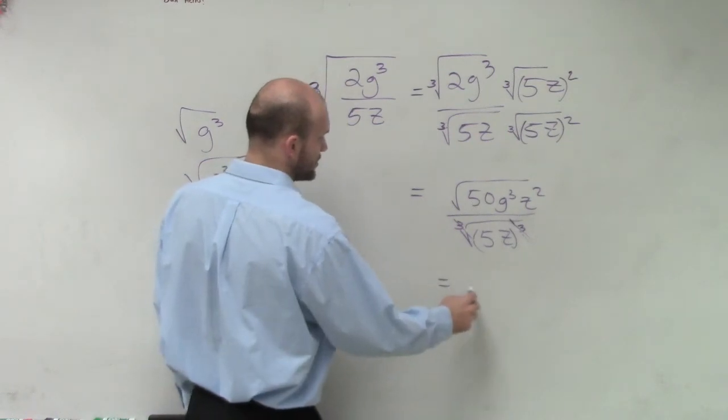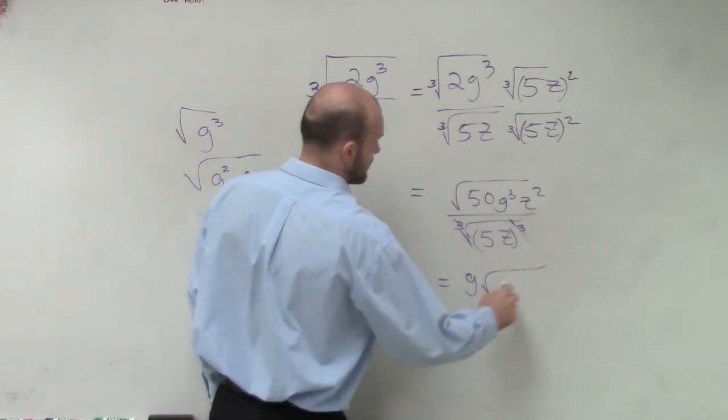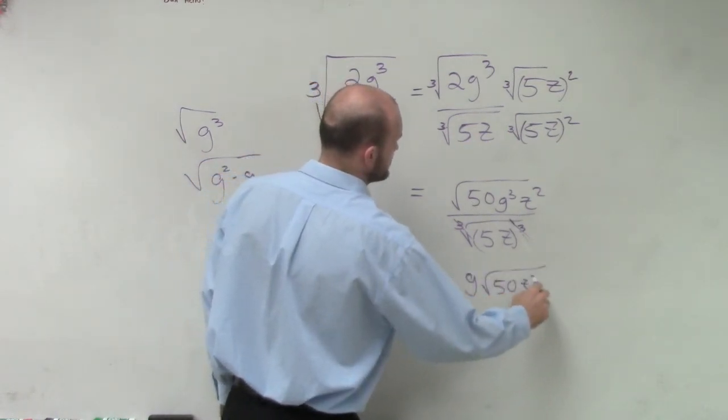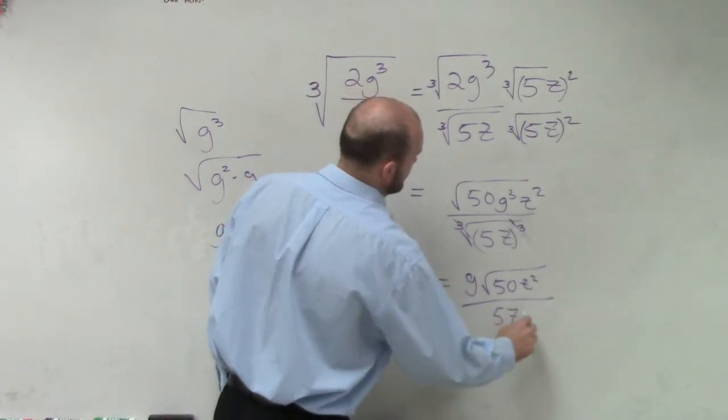So therefore, I had to be equal to g times the cube root of 50 z squared all over 5z.